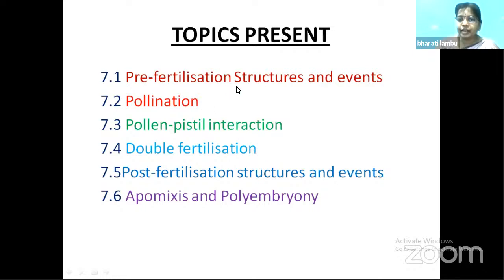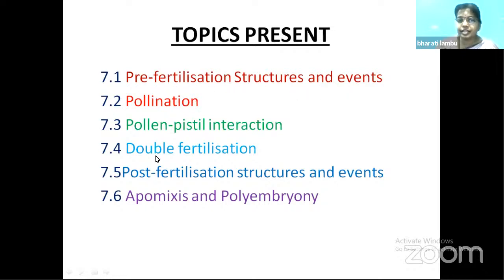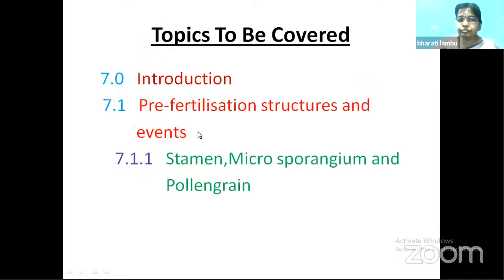In the pre-fertilization steps we come across gametogenesis and gamete transfer — the structures and events present before fertilization. In double fertilization we see the formation of the zygote, and in post-fertilization we see embryogenesis, the formation of the embryo. In today's session we will deal with the pre-fertilization structures and events, specifically the stamen, microsporangium, and pollen grain.